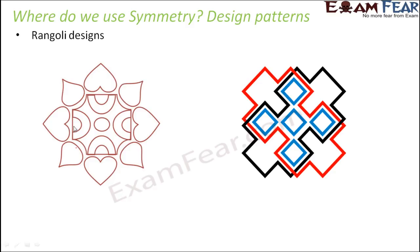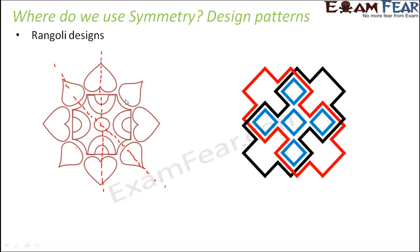Let us look at the first design. When you look at this design, think of a vertical line — you would see that it divides it exactly into two equal halves. Similarly, when you think of a diagonal line passing through the center of the design, you again see that it divides it into two equal halves. Basically, how these design patterns are made is you make a small part and then make mirror images of that part to make the whole image.